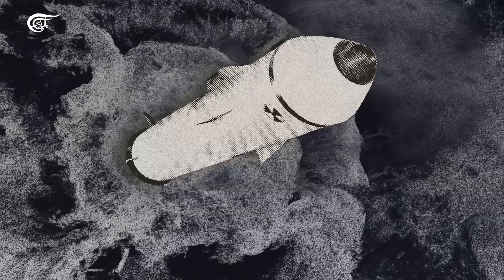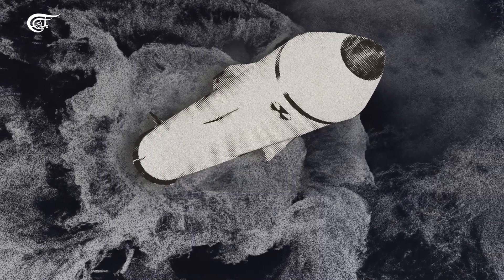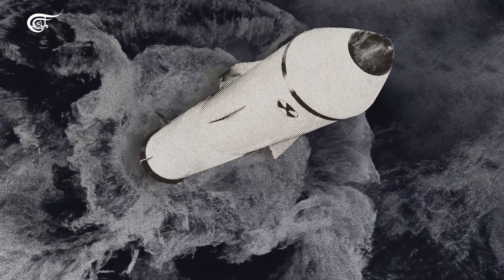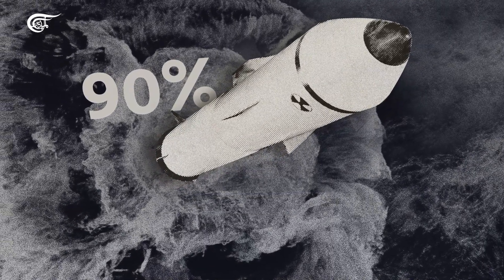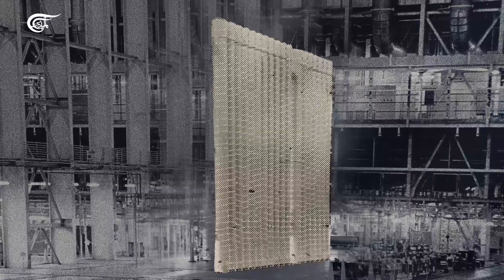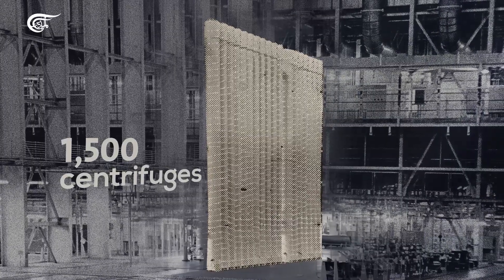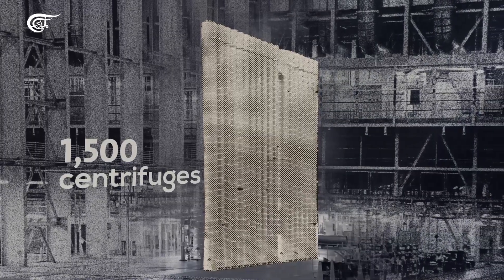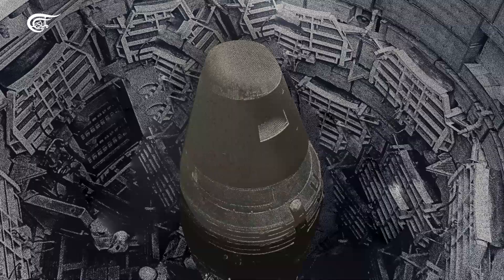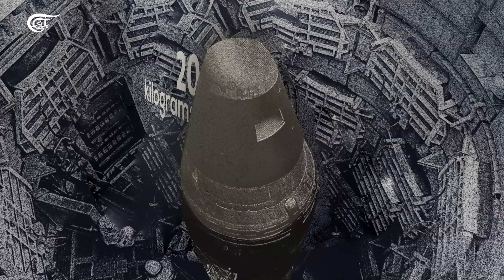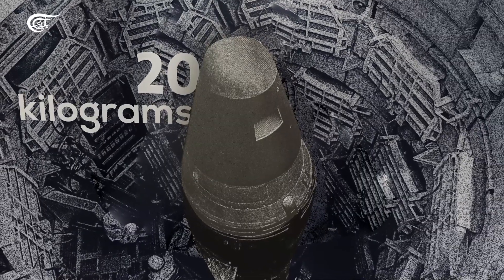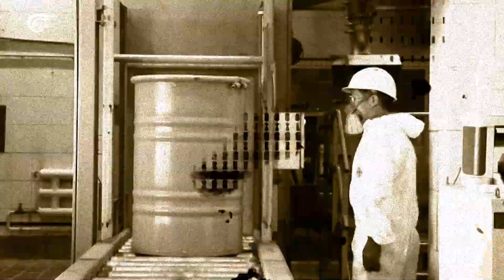The production of a nuclear bomb requires the use of 90% or more enriched uranium, and its manufacture requires the work of 1,500 centrifuges for a year. Each nuclear warhead requires about 20 kilograms of highly enriched uranium.